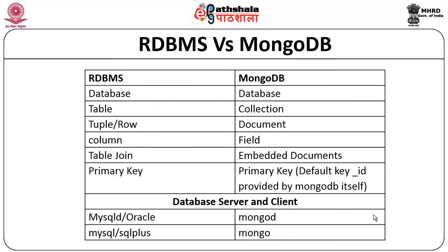Let us proceed knowing the differences between RDBMS and MongoDB. In RDBMS, what we term as database is also named the same way. But what we call a table in RDBMS is called a collection in MongoDB. Documents in MongoDB are equivalent to a row or tuple in RDBMS. Columns in RDBMS are equal to fields in MongoDB. The join of tables in RDBMS is equivalent to embedding documents in MongoDB — we do not have any explicit join in MongoDB, but embedded documents can be considered as joins.